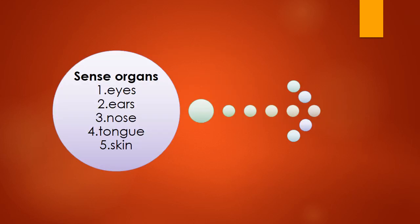Now we move to the second part of today's lecture: sense organs. There are five sense organs — eyes, ears, nose, tongue, and skin. From previous classes you have studied that these sense organs are responsible for telling us what is happening in our surroundings. Today we will discuss much more about this.